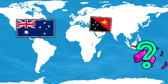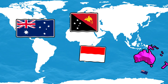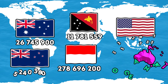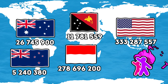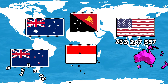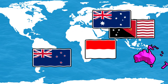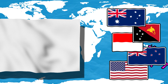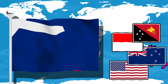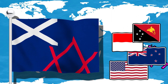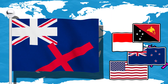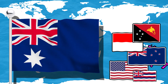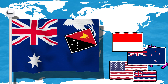Let's make not just a flag of the Australian continent, but an entire geographical region of Oceania. In this case, the list of countries will look very interesting. They are Australia, Papua New Guinea, Western New Guinea which belongs to Indonesia, New Zealand, and the United States — specifically the state of Hawaii.